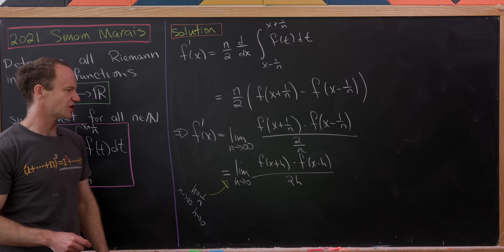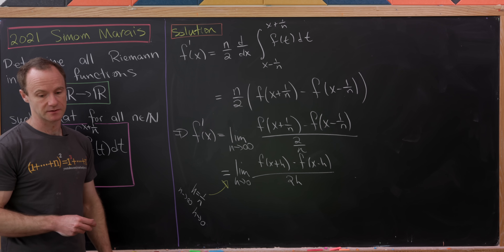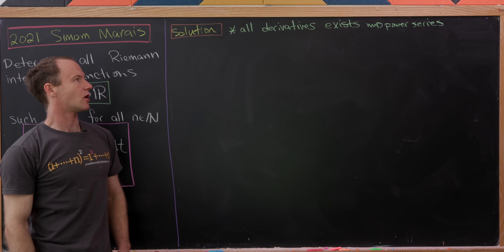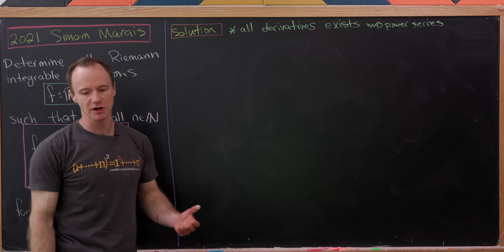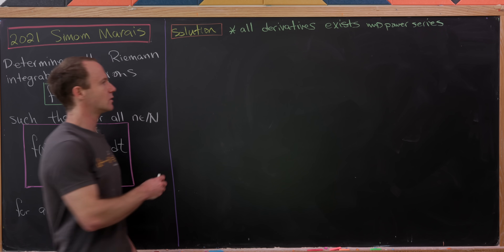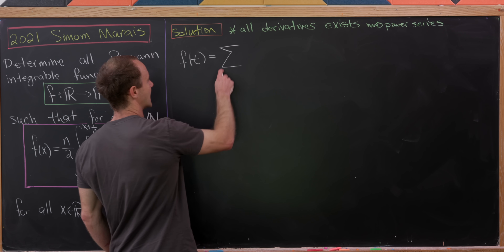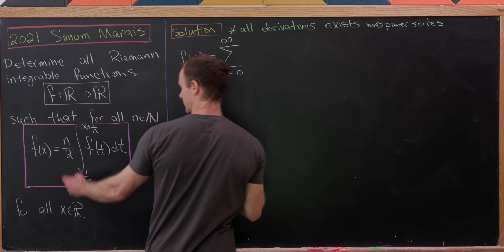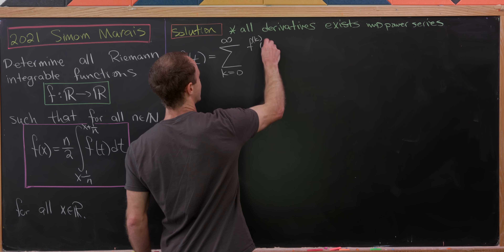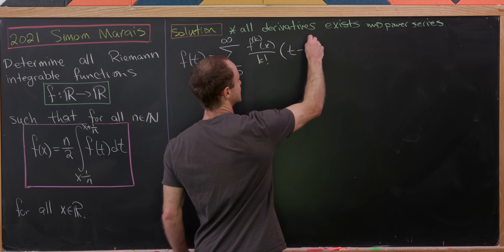Using a similar method, you can check that all derivatives exist, which means this is in fact a smooth function. Since it's smooth, we can do a Taylor expansion. We'll do a series expansion based at x for f of t: f of t equals the sum as k goes from 0 to infinity of the k-th derivative of f evaluated at x over k factorial times t minus x to the k.